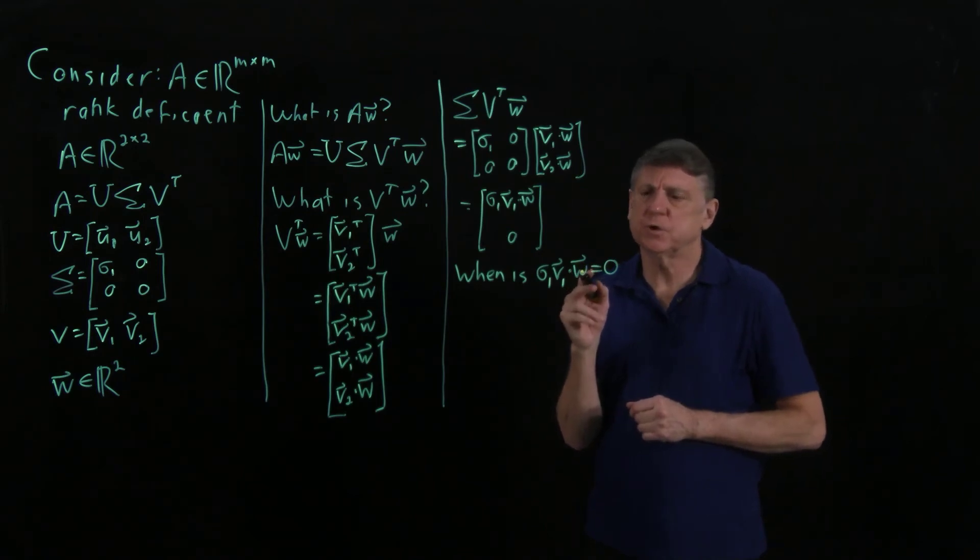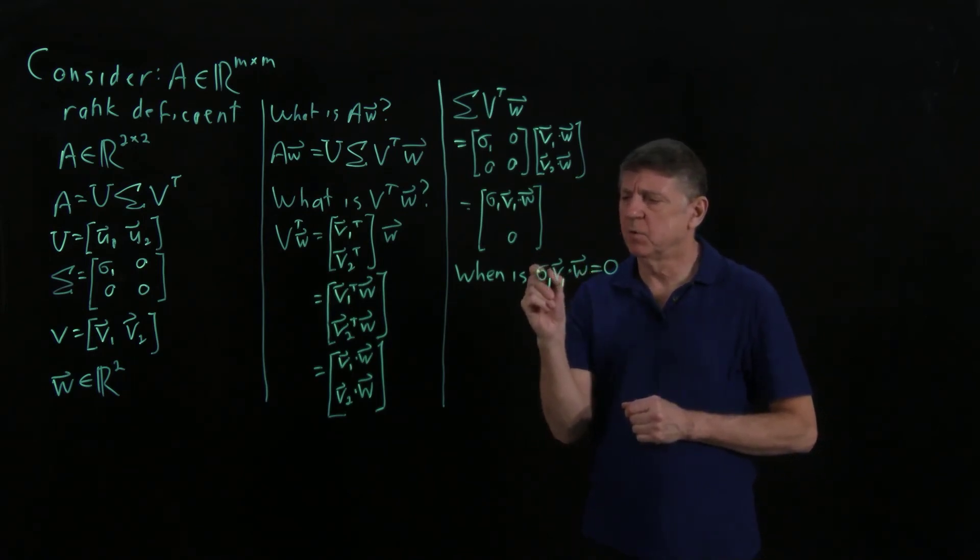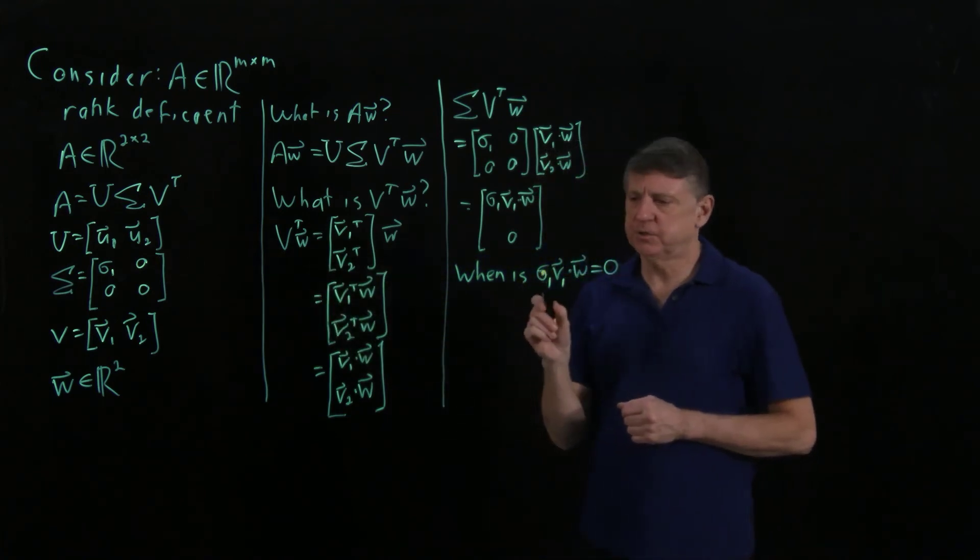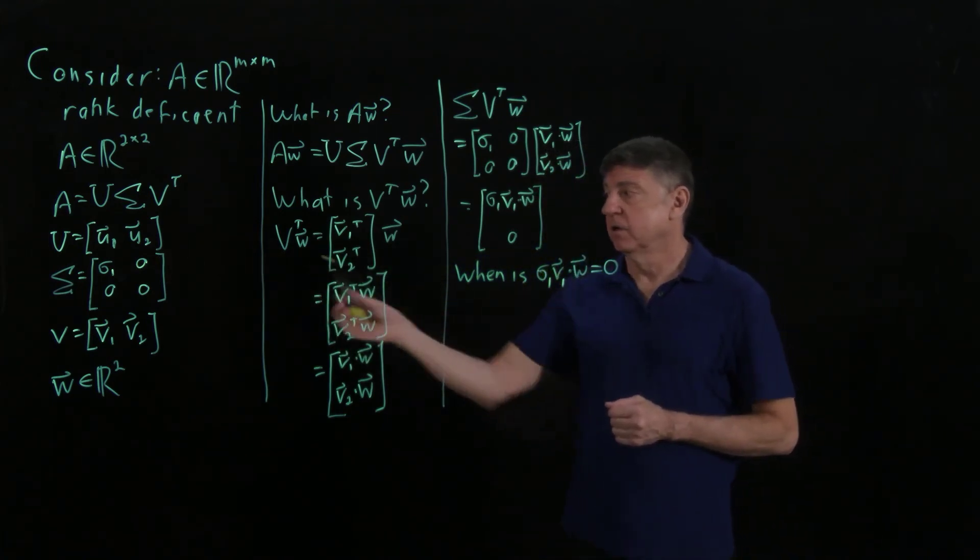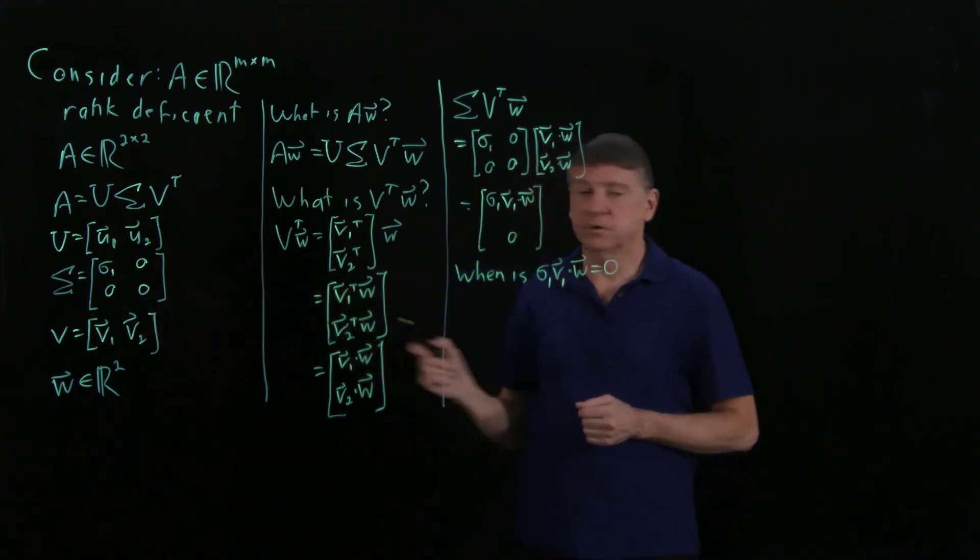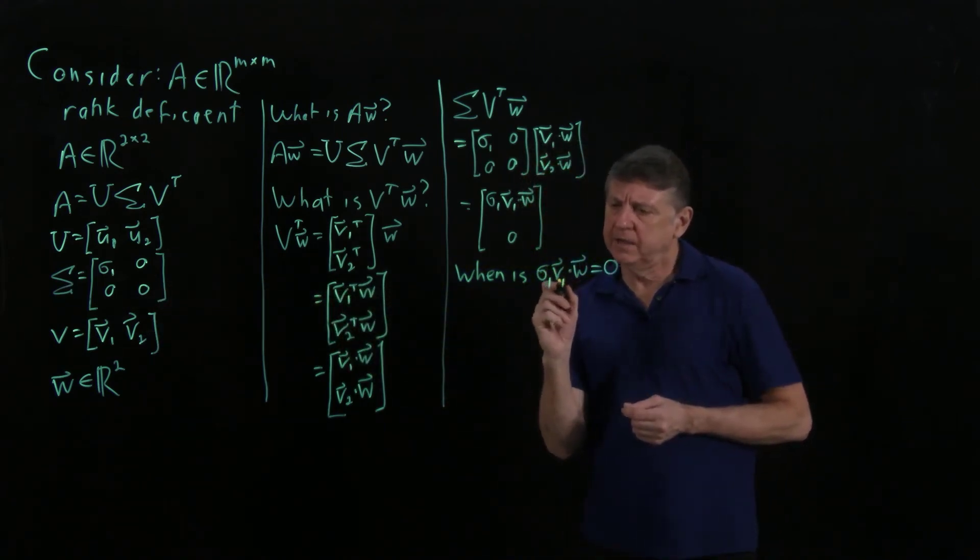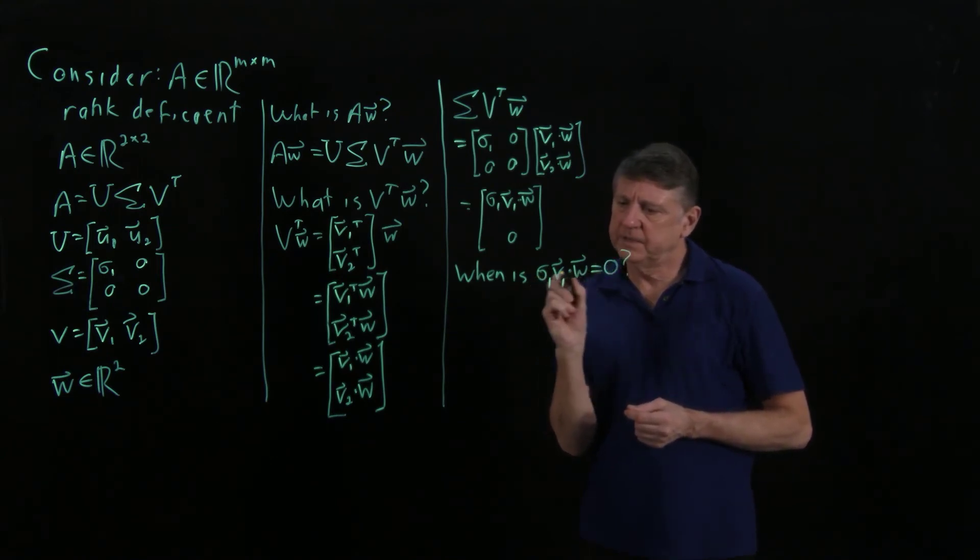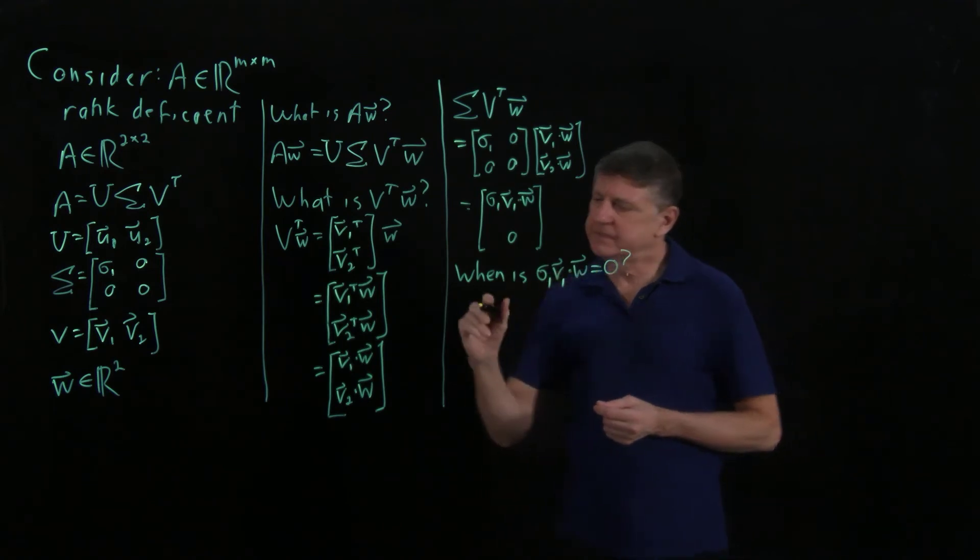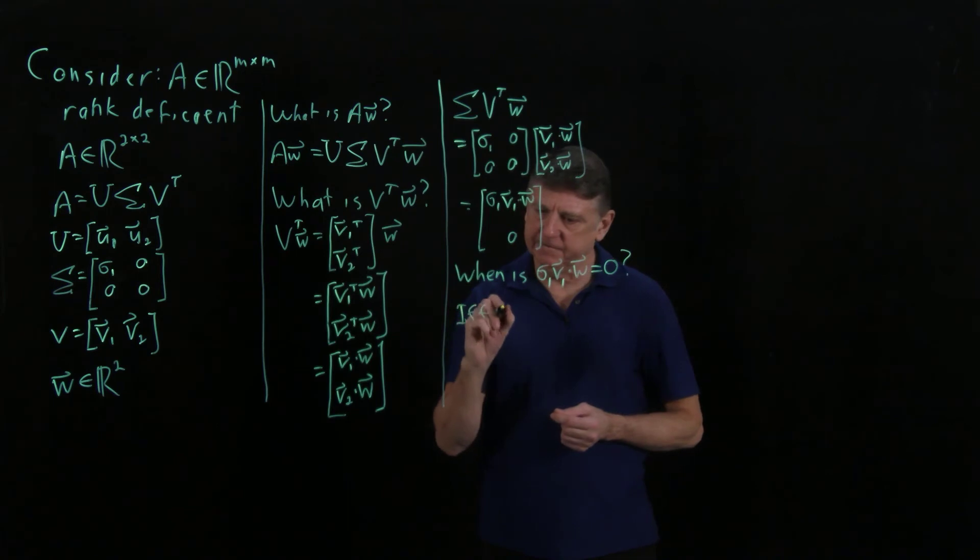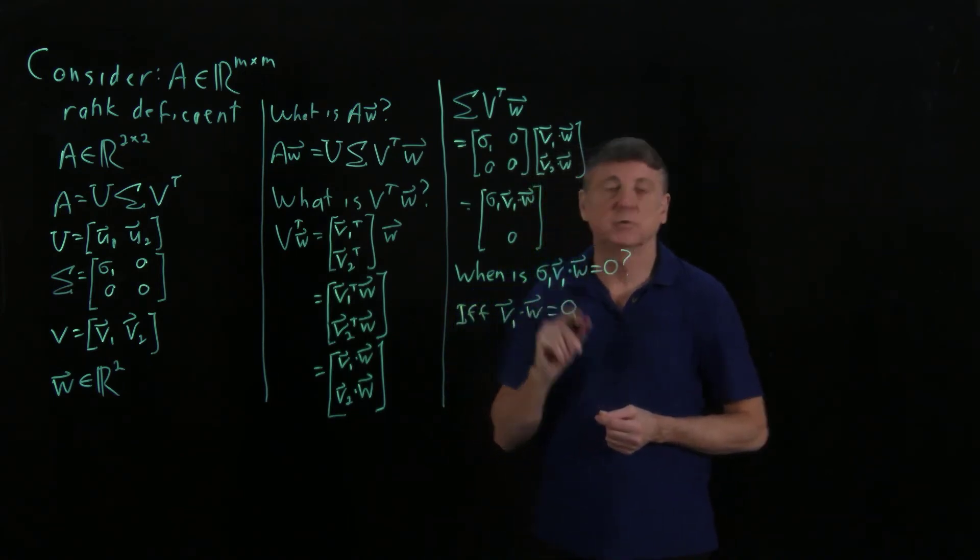Well, sigma 1, we're saying, we're supposing that that's non-zero. And V1 is the first column of an orthogonal matrix, so it can't be 0. So the only way that this value can equal 0 is, this is if and only if, V1 dot W equals 0.